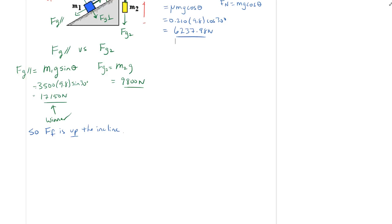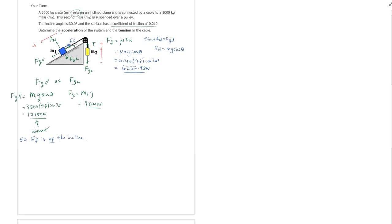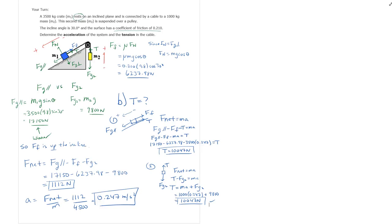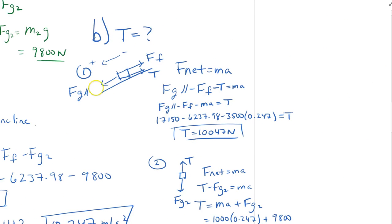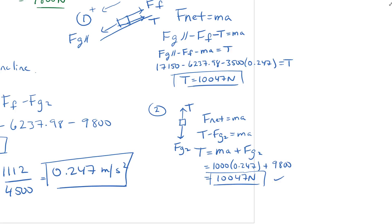Continue to do the F net and figure out the acceleration, then figure out the tension — hit pause now and try it. The answer: acceleration is 0.247 meters per second squared, found by writing the F net statement, plugging in numbers, and dividing by mass. For tension, the free body diagram of object one gives T equal to 10,047 newtons, confirmed by object two as well.